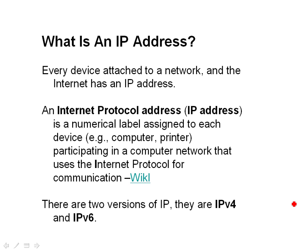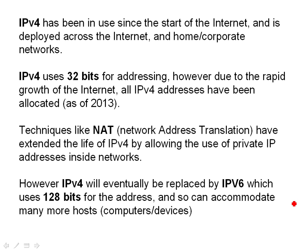There are actually two versions of the Internet Protocol or IP. They are IP version 4 and IP version 6. IP 4 is the one currently deployed across the Internet and across home and corporate networks.